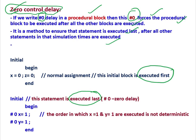For example, if you have two initial blocks — let's say this is the first initial block and this is another initial block. These initial blocks are executed independently and in parallel. The initial block is a procedural block, and the #0 delay is always included inside a procedural block. When we have two initial blocks, which one will be executed first? We don't know — that is decided by the simulator.